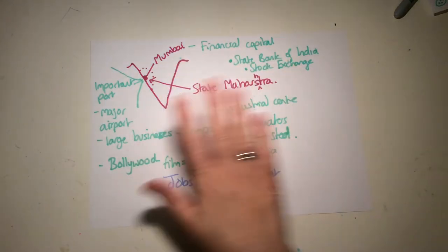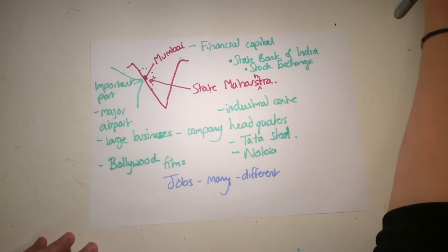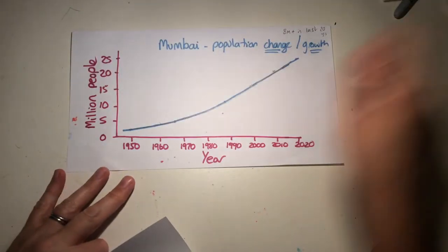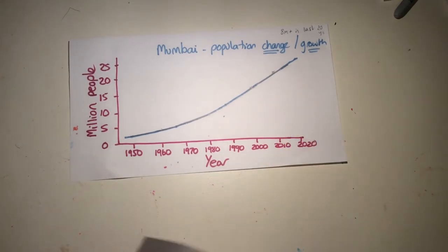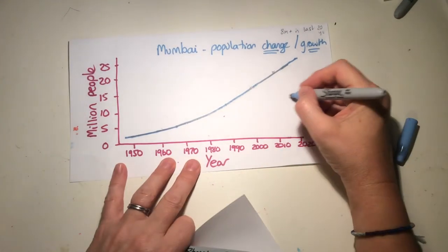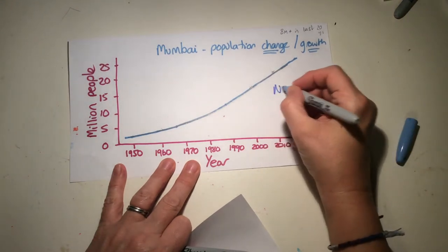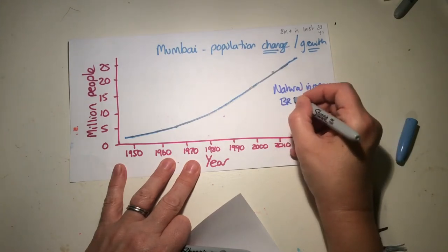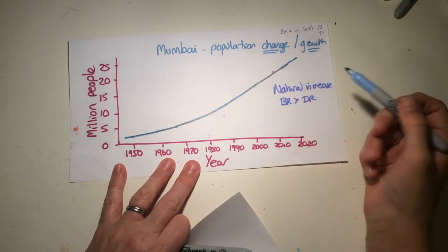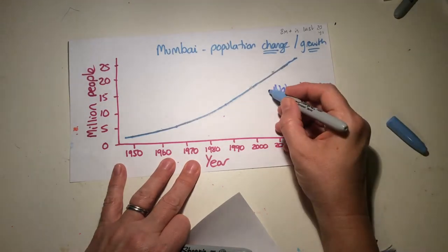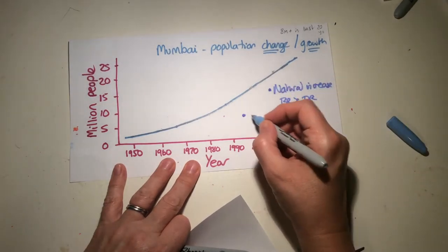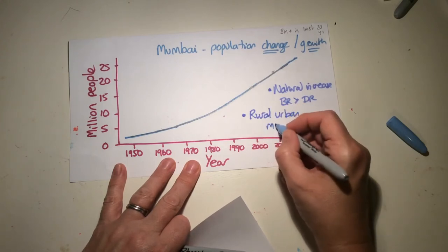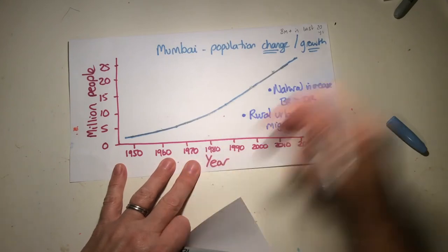The population graph shows the population going up. This is happening because of natural increase — where birth rate is greater than death rate — so more babies are being born than people are dying. But very importantly, we've also got rural-urban migration coming into Mumbai.